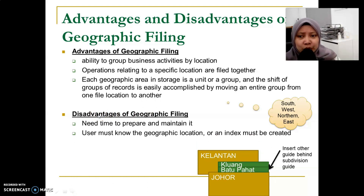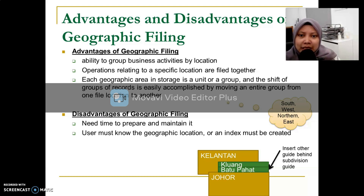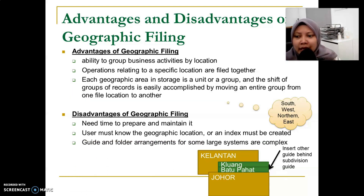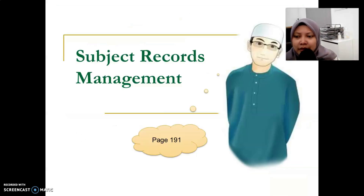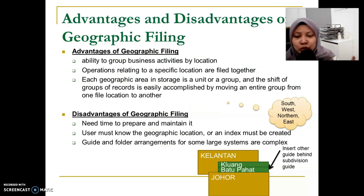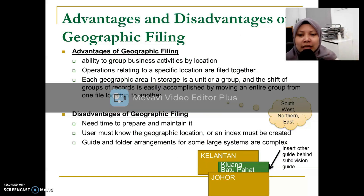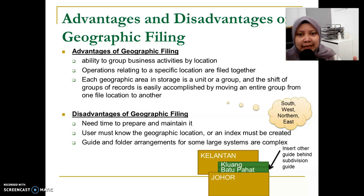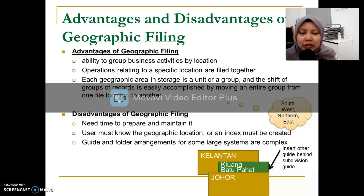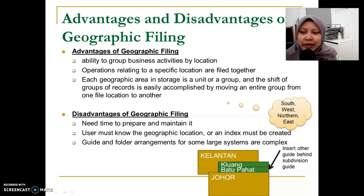However, the disadvantages are that it requires time to prepare and maintain. Staff who maintain the system need to know the geographic locations used, and an index must be produced. Also, guide and folder arrangements for large systems are very complex. For very large systems, geographic filing can be quite difficult and complicated. That is why some companies start by zone — North Zone, South Zone — and as the company grows, they break it down further by state for easier management. That's all for chapter five. Next class we will cover chapter 5.3 on the subject filing method. Thank you, Assalamualaikum.